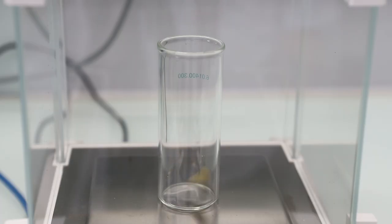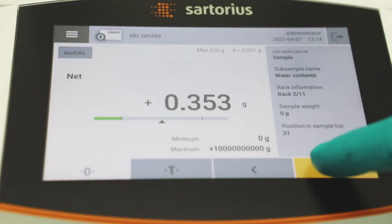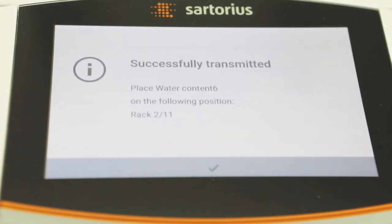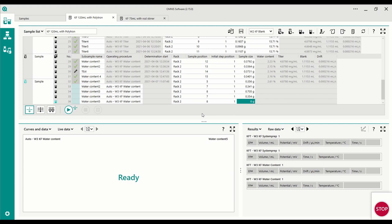Thanks to the connected balance, just weigh in your sample and directly transfer it into the Omnis software, avoiding typing mistakes.